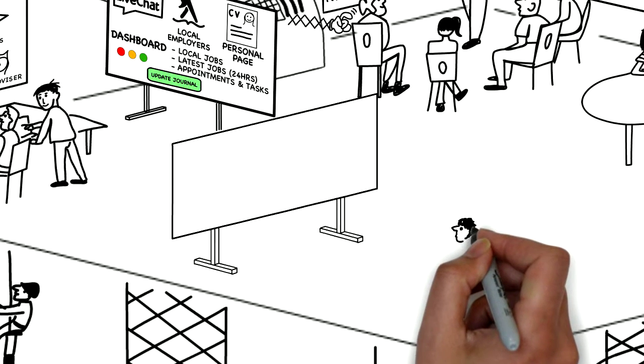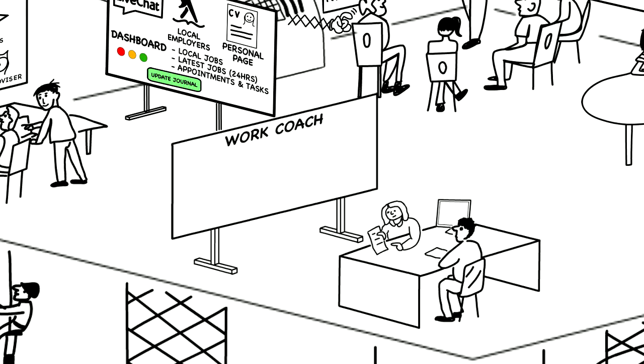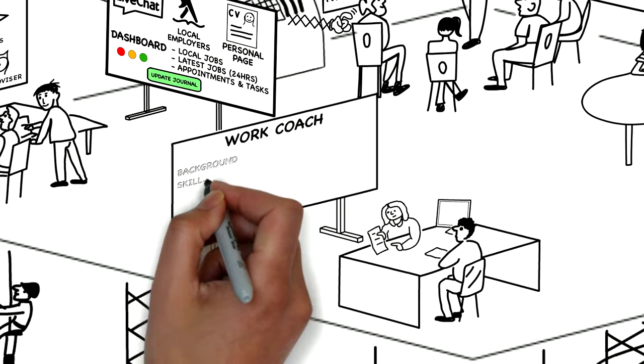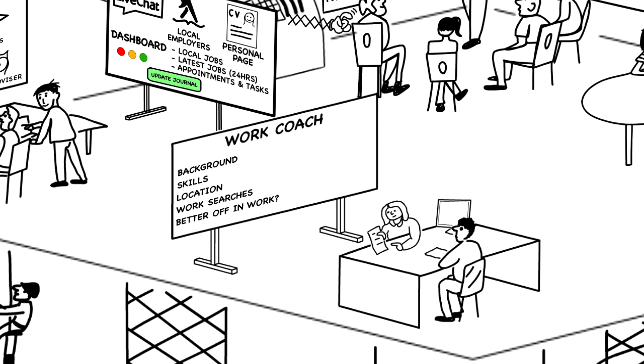And our third stakeholder is the work coach. The work coach needs to be provided with useful and relevant claimant data combined with labour market information if they are going to provide useful guidance to the claimants. A work coach dashboard might, therefore, have the following features: the claimant's background, including their skills, location and preferred commute times.